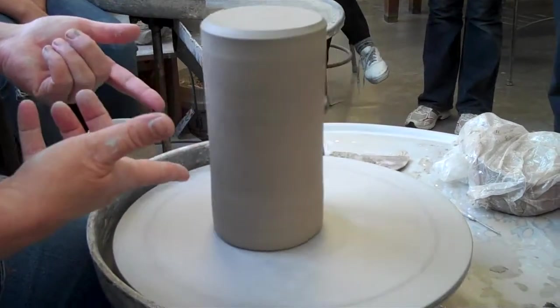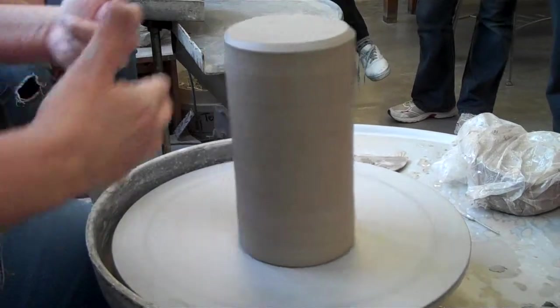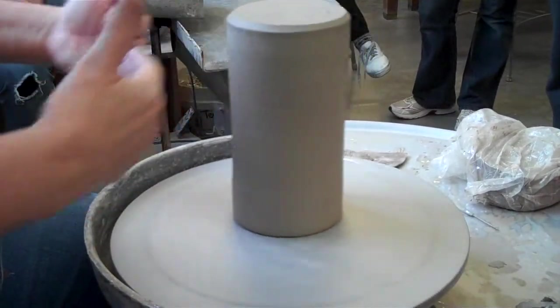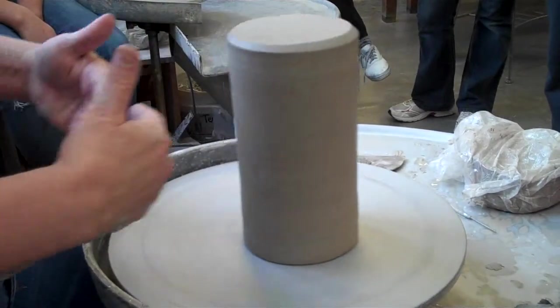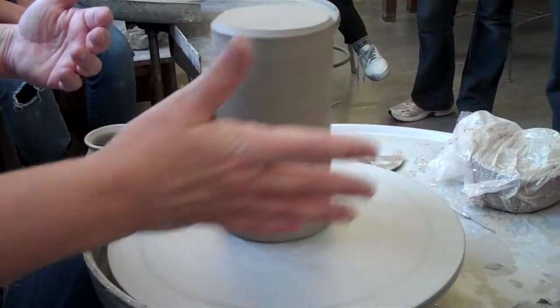So you set the pot on the wheel upside down, off center. You want to set it off center pretty dramatically so you can really easily see which side is off center. So since the wheel is spinning around at a regular rate, this side that's coming close to me is coming to me at a regular rate. If you're a musician, it's a very steady beat.